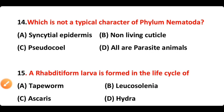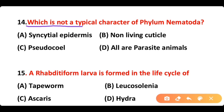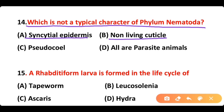Question 14: Which one is not a typical character of phylum Nematoda? A) syncytial epidermis, B) non-living cuticle, C) pseudocoelom, D) all are parasite animals. The correct answer is option D. All nematode worms are not parasites, so this is not a character of phylum Nematoda.